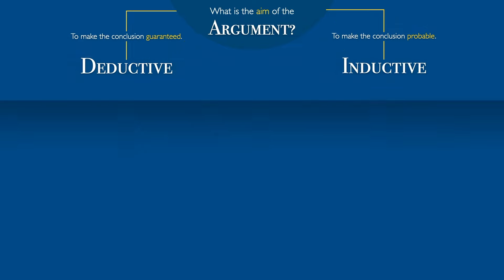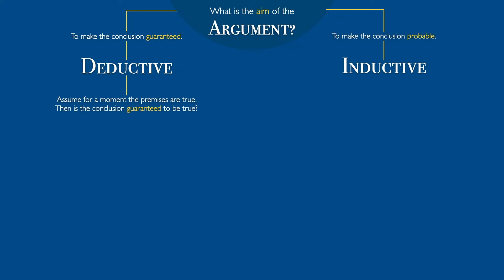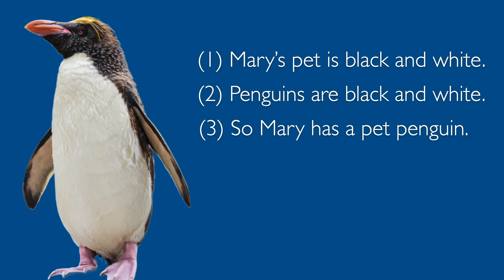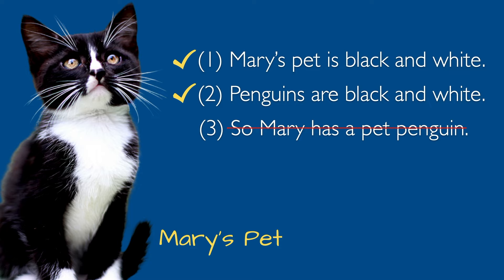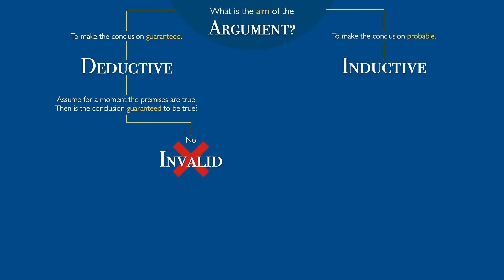Here in the second level of the chart, the question is not what the argument is aiming to do, but whether the reasoning succeeds in what it's aiming to do. On the deductive side: assume for a moment the premises are true — then is the conclusion guaranteed to be true? If not, the argument is invalid. For example: Mary's pet is black and white; penguins are black and white; so Mary has a pet penguin. Even if we assume the premises are true, that doesn't mean the conclusion has to be true. It might be that Mary has a black and white cat — the premises would be true, but the conclusion would be false. So this is invalid reasoning, because the premises, even if true, do not guarantee the conclusion.